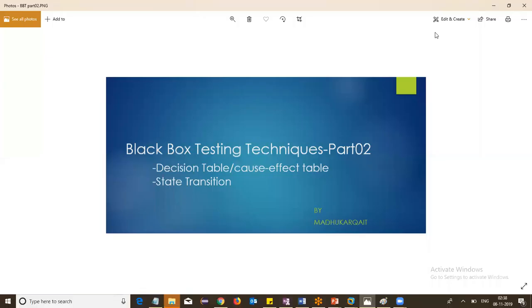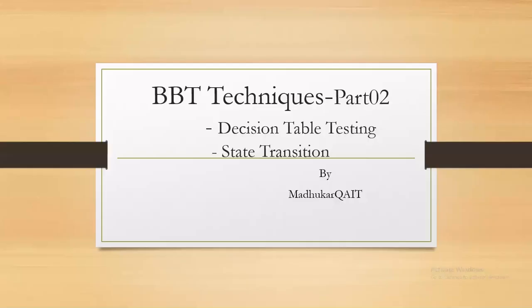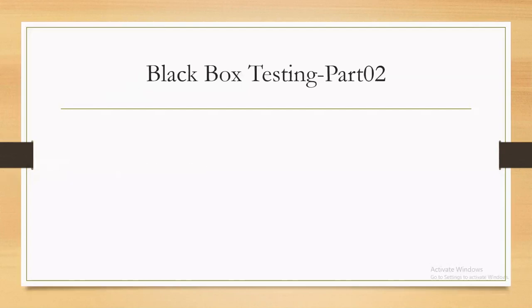Good morning friends. Today we are going to discuss blackboard testing techniques — specifically decision table testing and state transition testing. In the earlier session I covered boundary value analysis, equivalence class partition, and error guessing. Now we are going to see these other two techniques: decision table testing and state transition testing. The first three are the major techniques used to derive test cases, but from an interview point of view you also need to know these concepts.